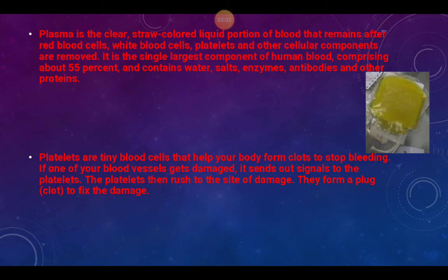Plasma is a clear, straw-colored liquid portion of blood that remains after red blood cells, white blood cells, platelets, and other cellular components are removed. It is the single largest component of human blood, comprising over 55 percent. Blood is roughly 55 percent plasma, 44 percent red blood cells, and 1 percent platelets and white blood cells. Plasma contains water, salts, enzymes, antibodies, and other proteins.